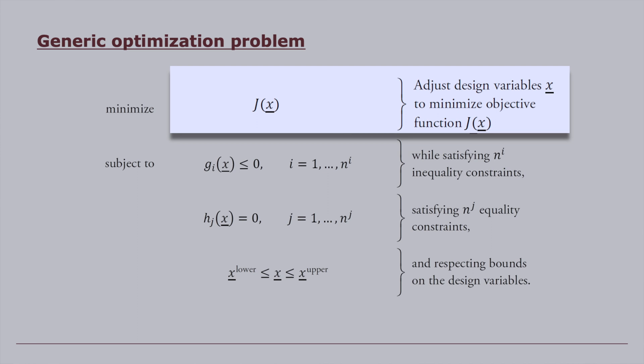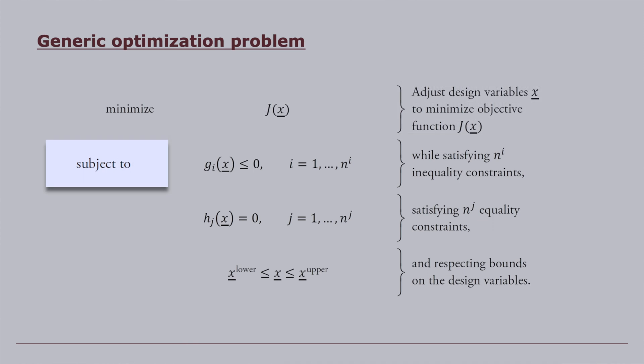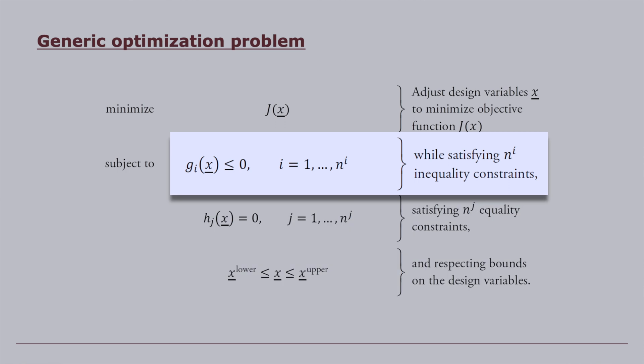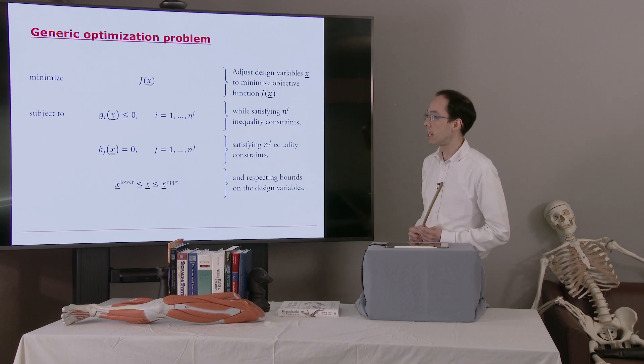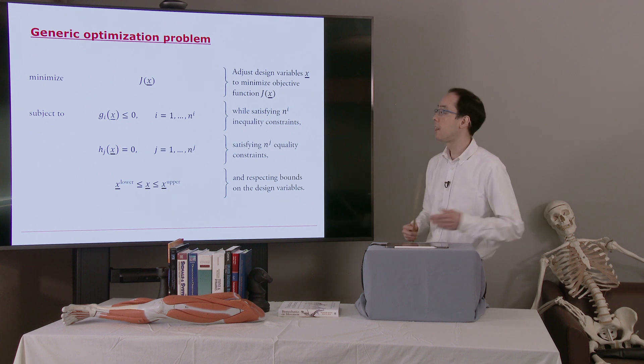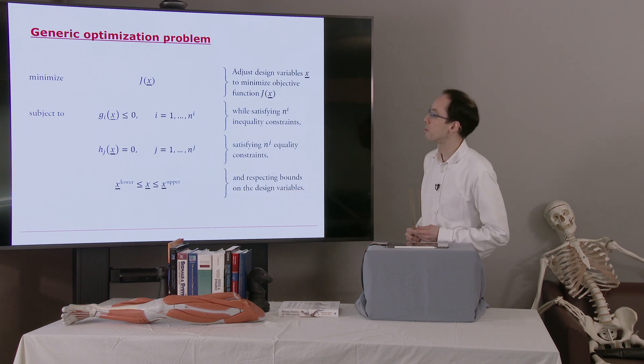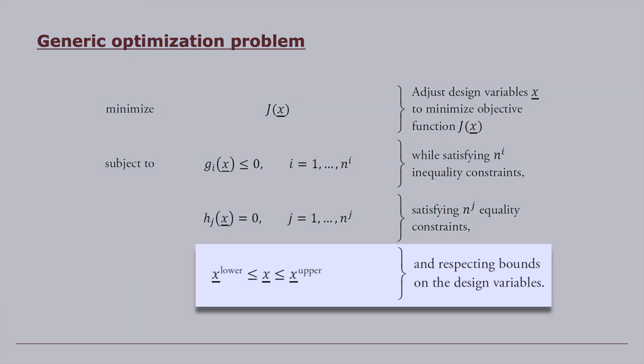And we have some constraints. So we want to accomplish this feat subject to satisfying all these constraints. So we have perhaps some inequality constraints. So there'd be some function of the design variables must be less than or equal to zero. We might have some equality constraints like Newton's laws, f equals ma. We might have other equality constraints in our system. So we have some functions. Again, they're functions of design variables. These must be equal to zero. And then we have some bounds on our design variables.